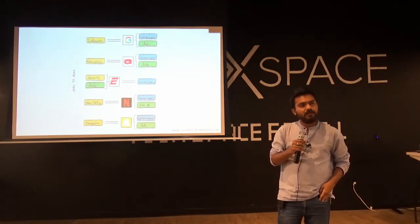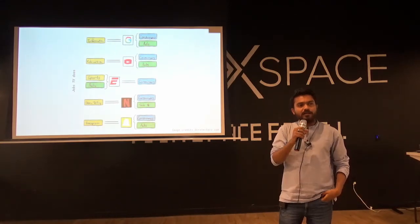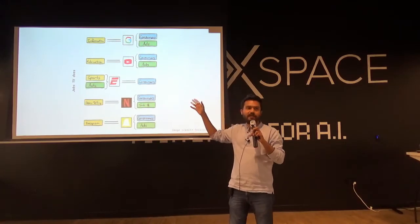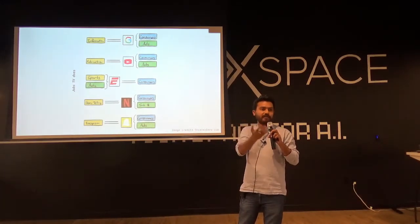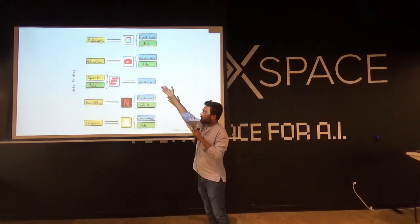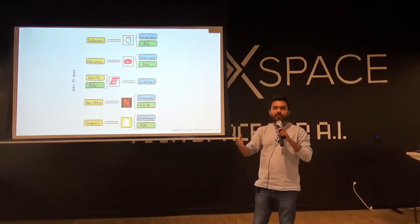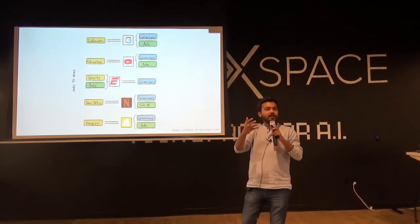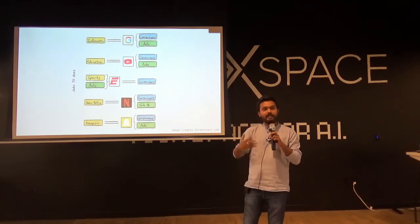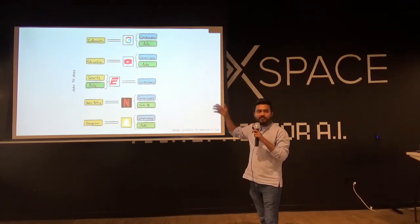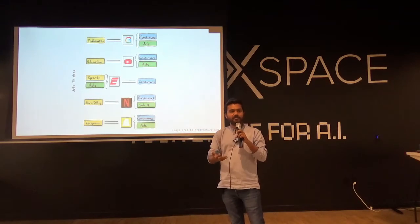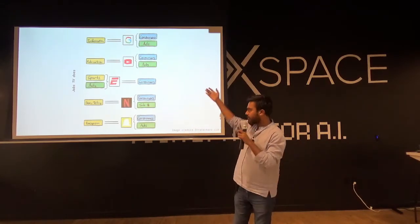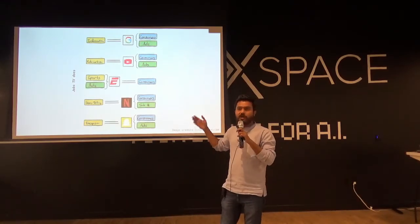The jobs theory point here is this: if you think about television as a product, it was solving jobs for day-to-day users — getting informed, getting educated, watching sports, storytelling, escapism. As and when internet services became dominant, these jobs were taken away one by one. Now most people watch traditional cable only for sports; for everything else, there are other alternatives that are becoming more and more dominant.